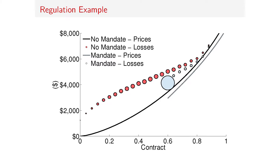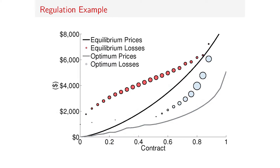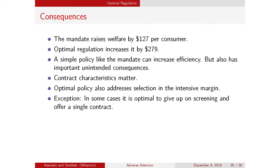Numerically, if I look at the mandate, it had this large unintended consequence. The optimal regulation looks quite different—not only do you want to get people into the market, but you also want to give a large subsidy on the intensive margin to address adverse selection there. You can see how that price curve is much flatter. In our baseline calibration, the mandate raises welfare by about $150, and optimal regulation raises it by an additional $150—so you get just as large a gain from the intensive margin intervention as from the extensive margin one.